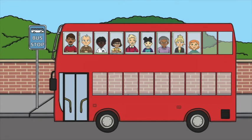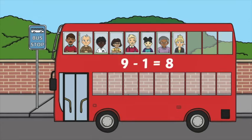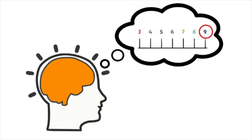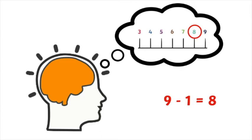First there were nine passengers on the bus. Then one passenger popped off. Now how many passengers are there? Nine take away one equals eight. Imagine a number line in your head — starting at nine, count back one. The answer is eight. Nine take away one equals eight.